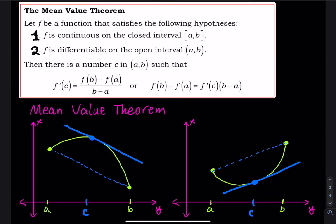The Mean Value Theorem is similar to Rolle's Theorem with one exception. Let f be a function that satisfies the following hypotheses: number one, the function is continuous on the closed interval [a, b]; number two, the function is differentiable on the open interval (a, b). That is the difference. Then there is a number c between a and b such that f'(c) equals f(b) minus f(a) divided by b minus a.